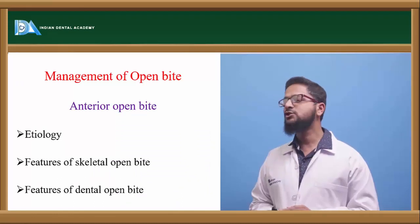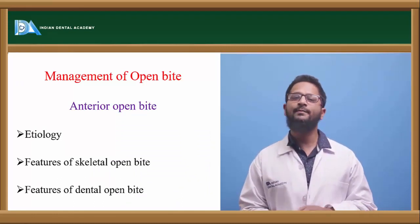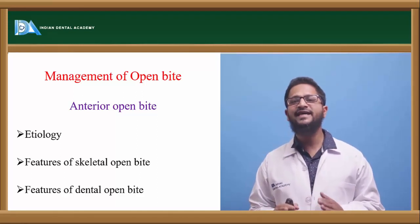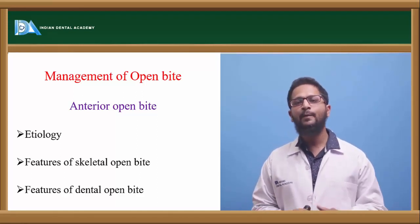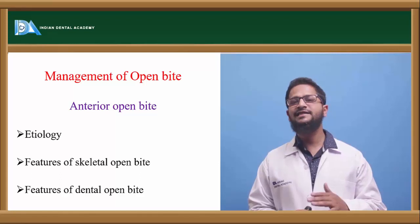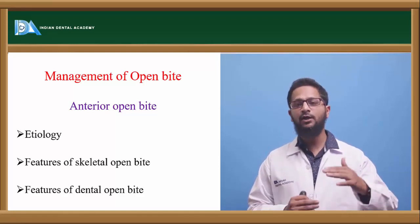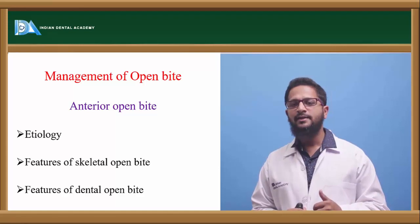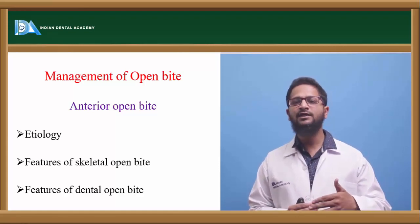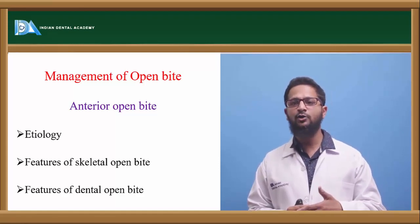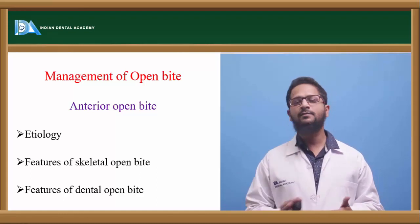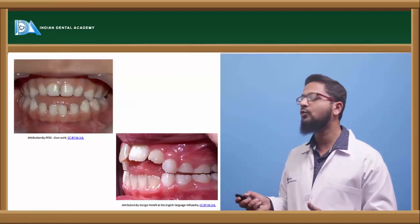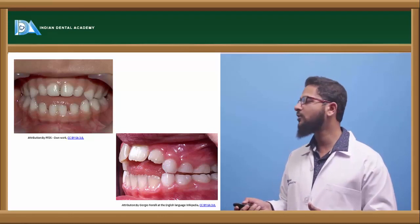Next, let us know how to manage an openbite case. Openbite is a condition wherein there is lack of vertical overlap between upper and lower arches — there is no overlap. Normally there should be proper overbite between upper and lower teeth, but in openbite there will be no vertical overlap between the upper and lower teeth. This openbite can be anterior openbite or posterior openbite.